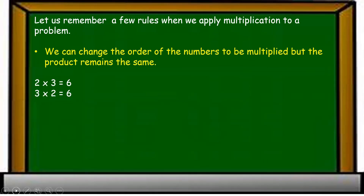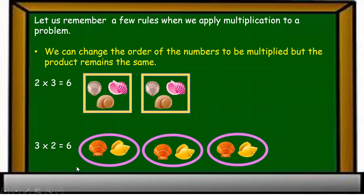Now let us remember a few rules when we apply multiplication. First, we can change the order of the numbers to be multiplied but the product remains the same. For example, two into three is equal to six, and three into two also equals six. Two into three means two groups of three each, and three into two means three groups of two each — both give the same product.